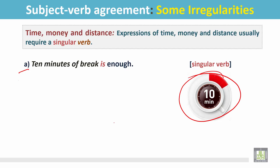Example A: Ten minutes of break is enough. This is a break of 10 minutes. The subject is 10 minutes. It mentions a singular quantity, so the verb is singular.